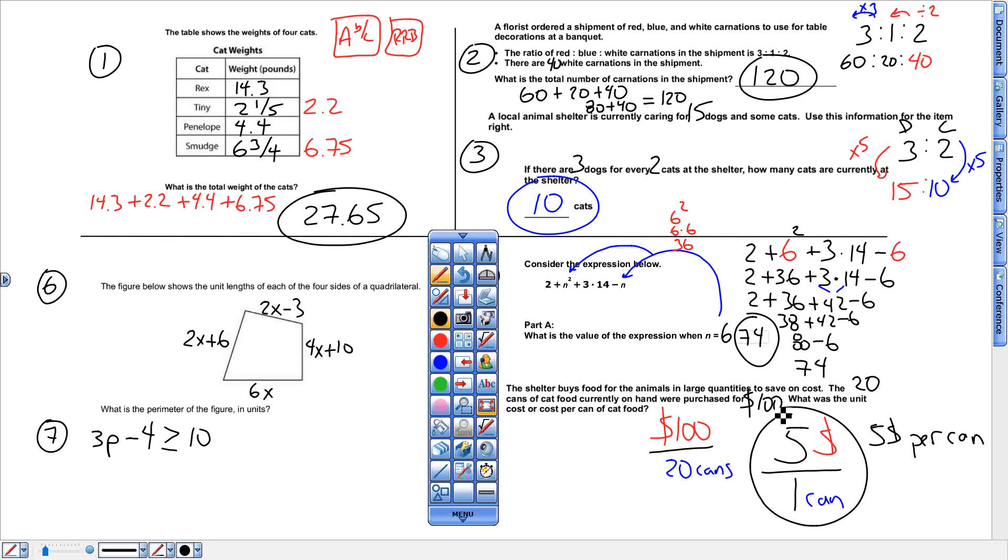All right, here we go. Next, perimeter means add up all these links. But when you're adding them up, you're adding only the x numbers together and then only the plain numbers together. That's what you're combining together. So if I combine all those x's together, 2 plus 2 plus 2, 4, 8 plus 6 gives me 14 of those total x's.